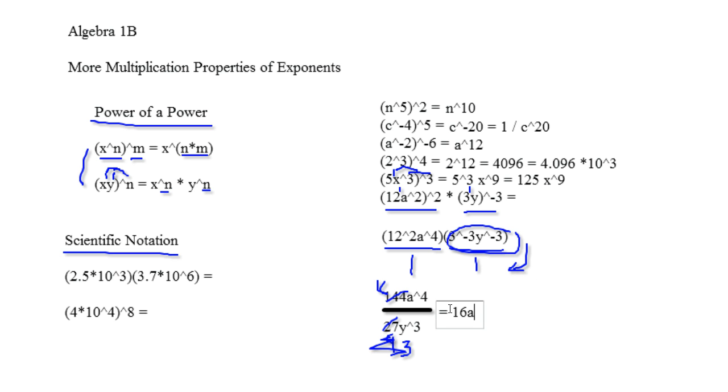So this actually becomes 16 a to the fourth on the top over 3y cubed.